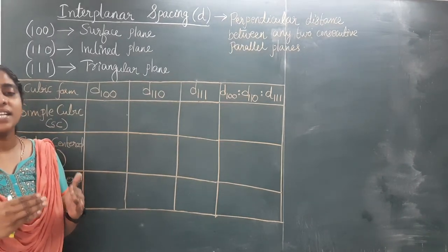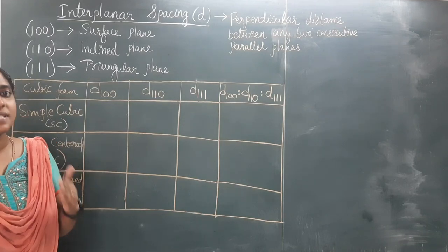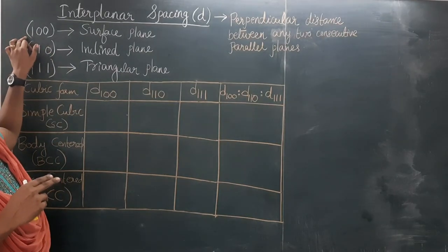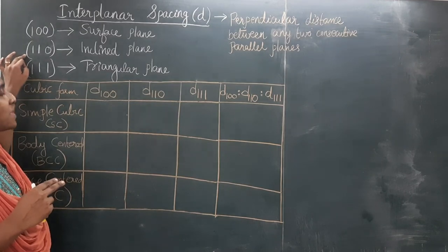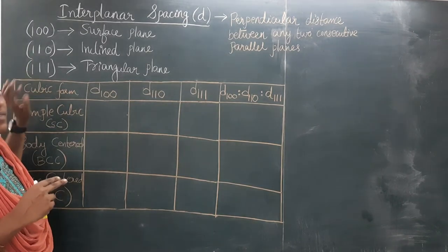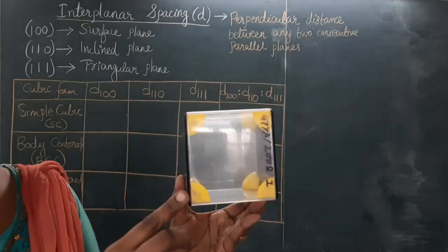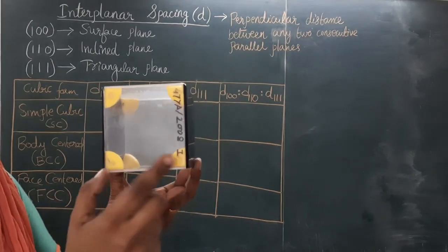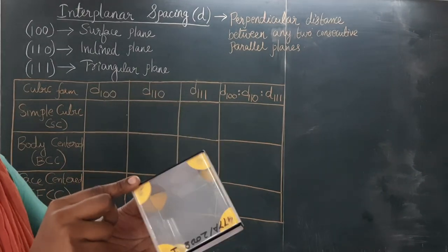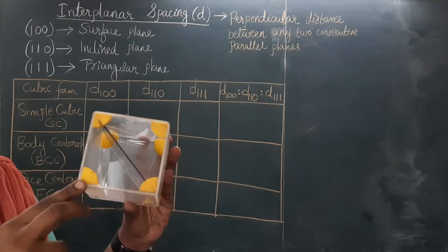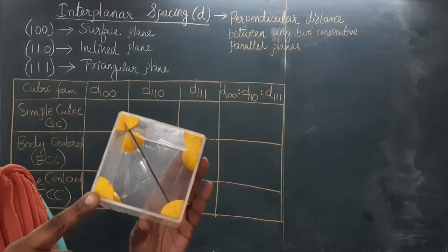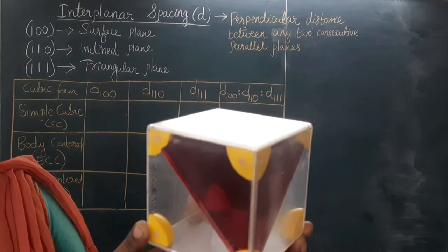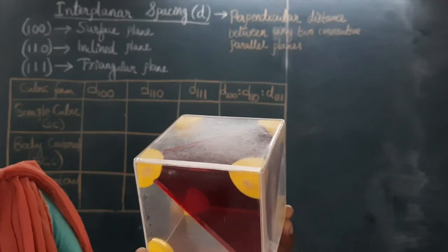In a crystal structure, we are considering maybe three principal planes. They are the 100 family planes, 110 family planes, and 111 family planes. The 100 family is the surface plane that will be along the surface of a unit cell. Whereas the 110 family is an inclined plane. The 111 family is a triangular plane.